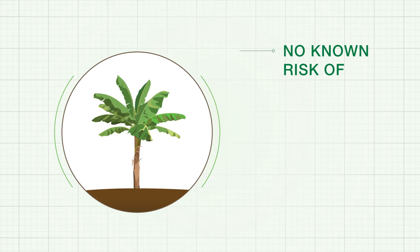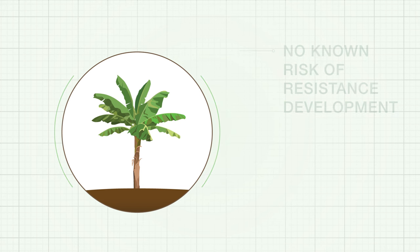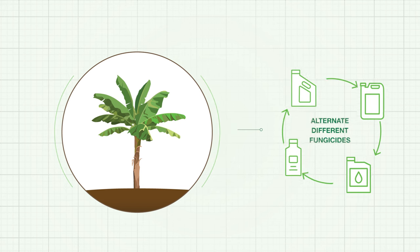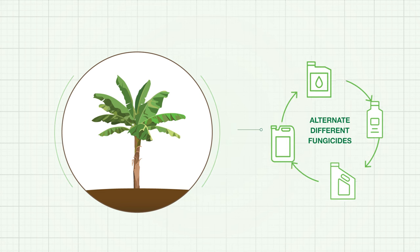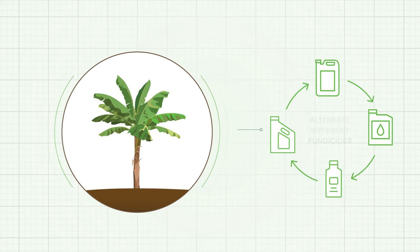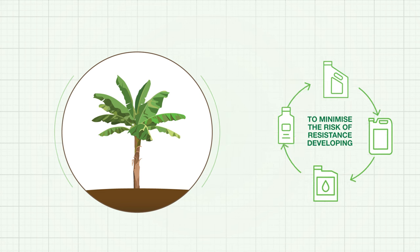With Routine there is no known risk of resistance development, and it should be used as part of a regular preventative program, where growers should alternate different fungicides from different chemical mode of action groups to minimize the risk of resistance developing.